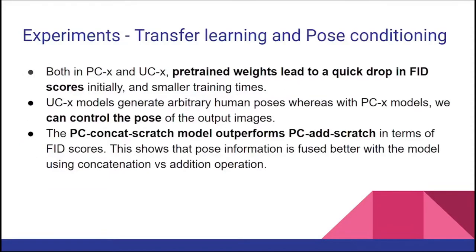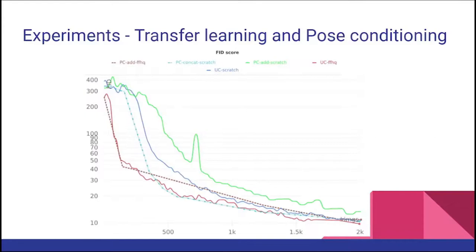The first results are regarding transfer learning and pose conditioning. In both pose-conditioned and unconditioned models, using transfer learning led to a very quick drop in FID scores. In this chart, we see that models trained using transfer learning — UCFHQ and PCADFFHQ — show a very steep decline in FID score in the initial stages of training.